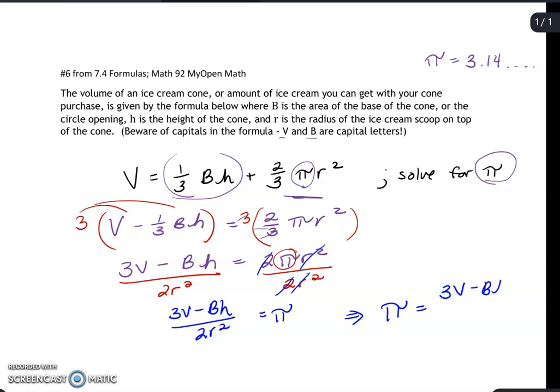That is equivalent to saying pi equals 3V minus BH over 2r squared. Now remember when you type that in to MyOpenMath, you have to use the capital V and the capital B or it will mark you incorrect. Let me know if that's what's happening as well, like if you're having issues with entering and getting a syntax error.